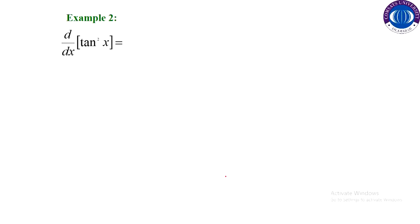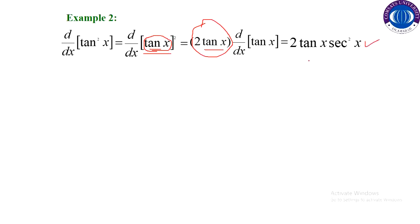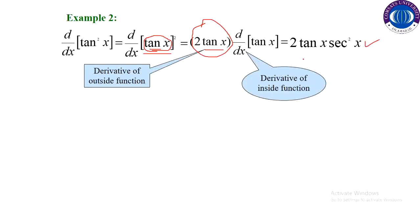Example 2: we have the function tangent squared x and we have to differentiate this with respect to x. We can write tangent squared x as tangent x raised to the power 2. Using the power rule, we get 2 times tangent x, then multiplied by the derivative of the inside function. The inside function is tangent x, so its derivative is sec squared x. Our derivative is 2 times tangent x times sec squared x.